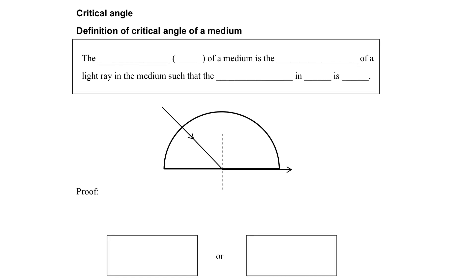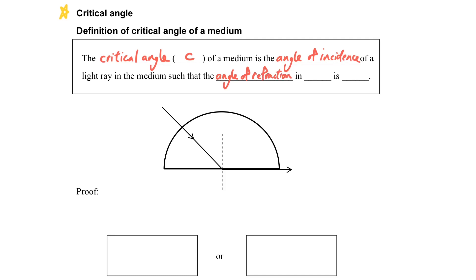This important angle we call the critical angle C. By definition, what is the critical angle? The critical angle C of a medium is the angle of incidence of the light ray in the medium such that the angle of refraction is just equal to 90 degrees. This is the definition of the critical angle, and from this definition we can derive a formula. Here we will show how we derive it.